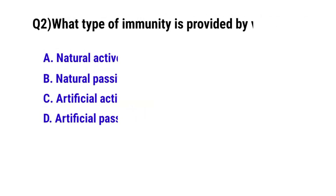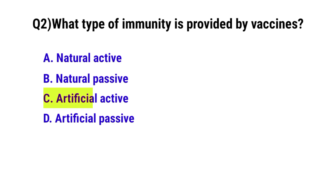Question No. 2. What type of immunity is provided by vaccines? The correct option is C: Artificial acquired immunity.